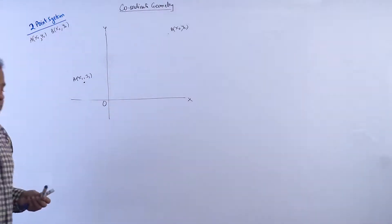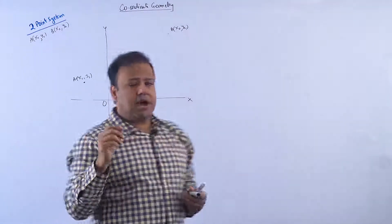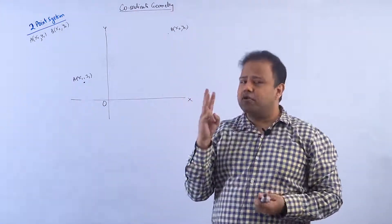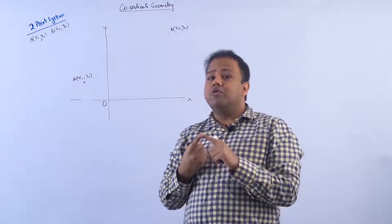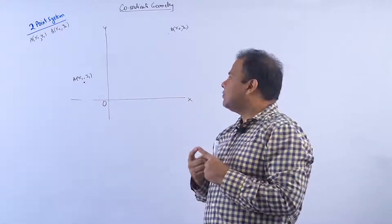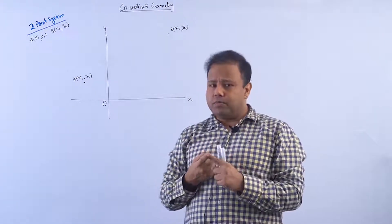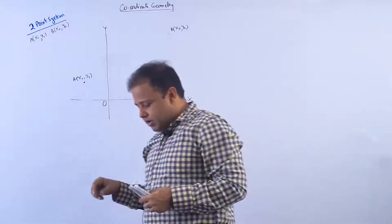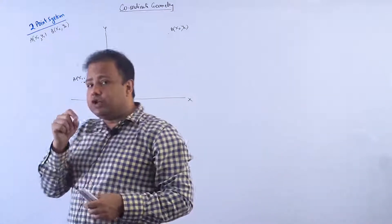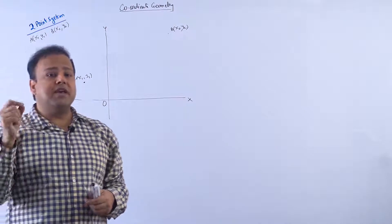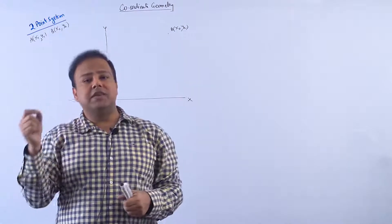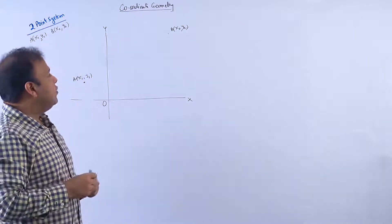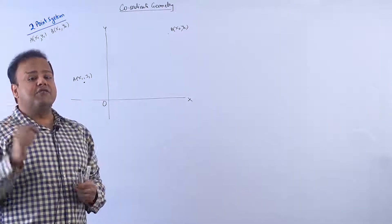When we are talking about two points, basically three or four things come to mind. First is their distance, second is their slope, and third is the section formula — if you remember: (mx2 + nx1)/(m+n), (my2 + ny1)/(m+n). So first we are going for the distance formula.